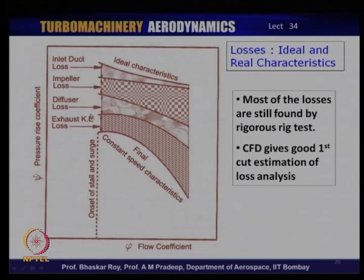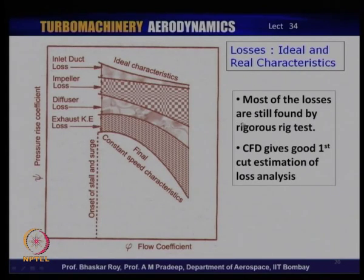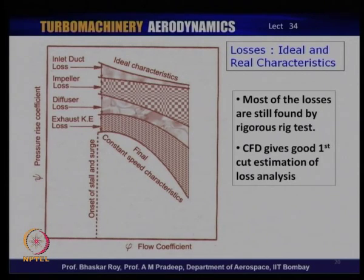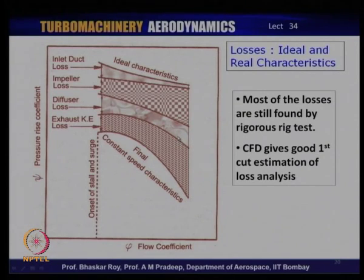Losses are the most difficult things to determine in aerodynamic machines, and typically the losses are finally confirmed only after rig tests are done. CFD analysis gives a very good first-cut estimation and a reasonable idea of the losses occurring. Some design loss correlations are available in textbooks and old handbooks, and one can use design-value empirical or semi-empirical correlations to figure out what the losses should be and how they should be factored in to get a possible design performance of the centrifugal compressor.